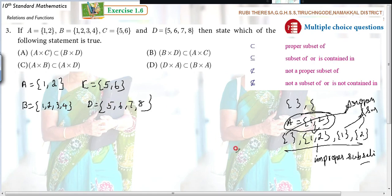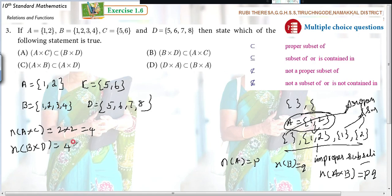Just you see the number of elements. Already, you know about the cross product. That is, n(A) equals P, n(B) equals Q. Then n(A×B) equals P into Q. So what is the n(A×C)? 2 times 2 is 4. Next, n(B×D) equals what? 4 times 4 is 16. Now, by seeing the cardinal number, you will be saying that A×C is the subset of B×D.